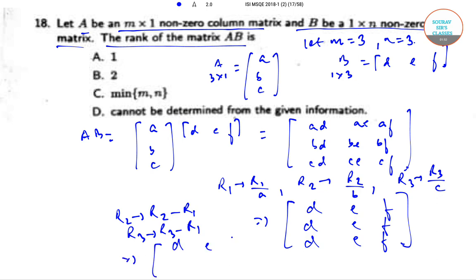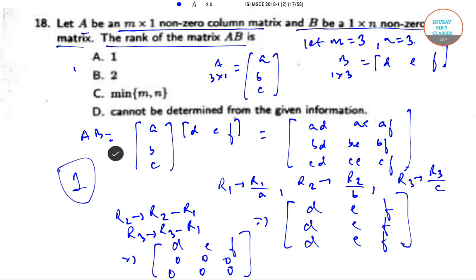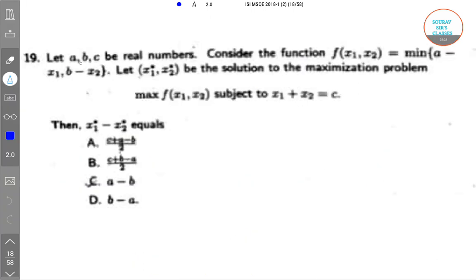After row operations, the matrix becomes 0 0 0 and 0 0 0 for the lower rows. We have just one non-zero row where there is a single element which does not have a zero, so the rank of the matrix equals 1. Option A.